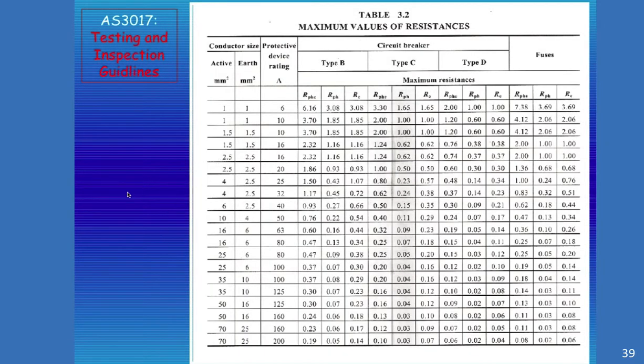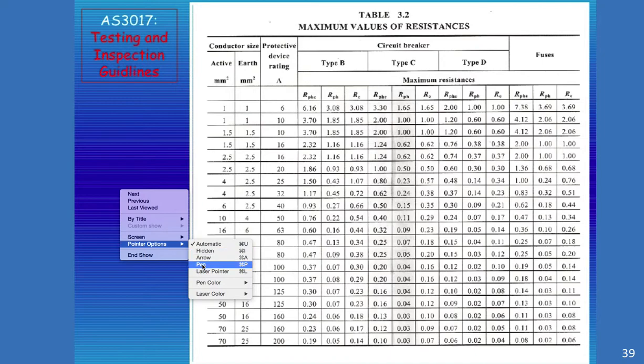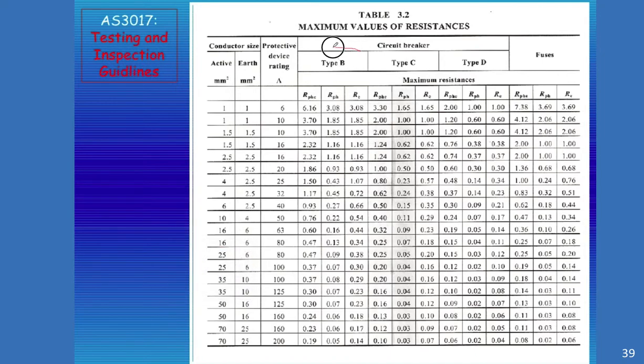Here's our table again from AS3017. And I've just put this here to remind you that circuit breakers come in B's, C's, and D's. Fuses are all grouped together over here. And this particular table tells us the maximum values of resistance for different components within the loop, depending on the size of your active, the size of your Earth, and the protective device's current rating.